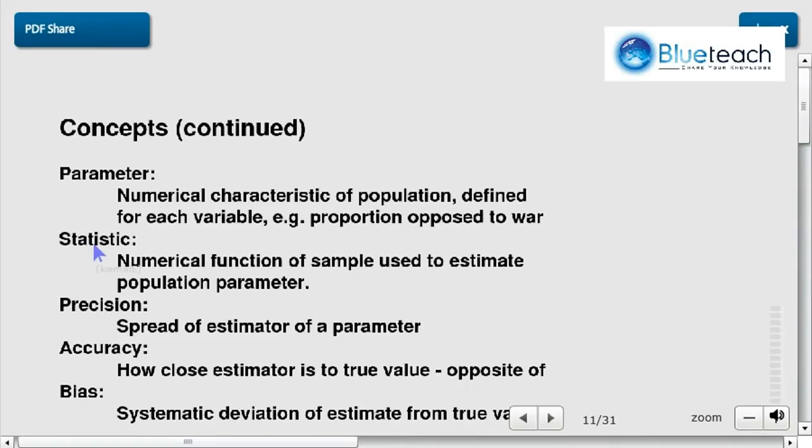So what's a statistic? A statistic is a numerical function of a sample used to estimate a population parameter. So what that means is if the parameter, for example, is the average age of the population—remember, of the population—that's very important. Remember the difference between population and sample.